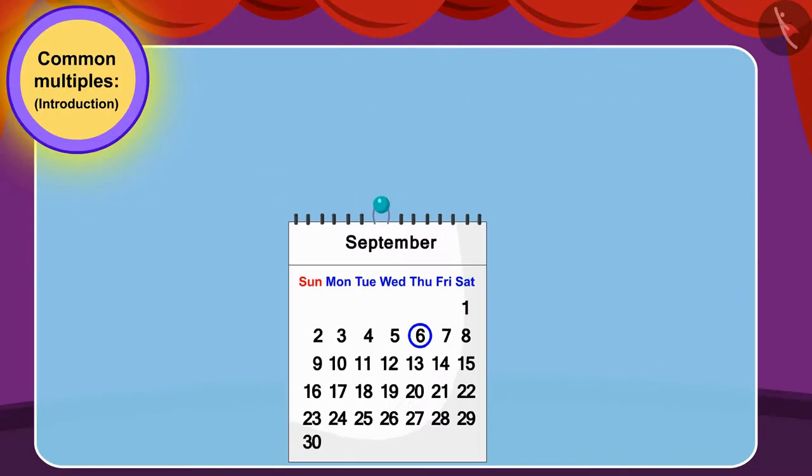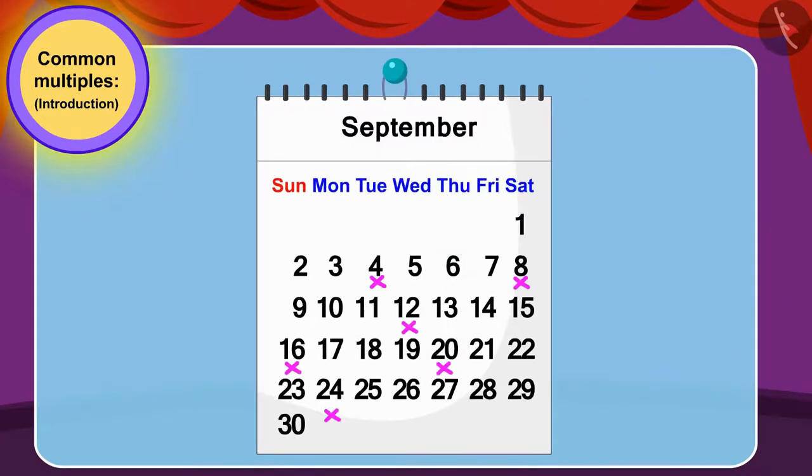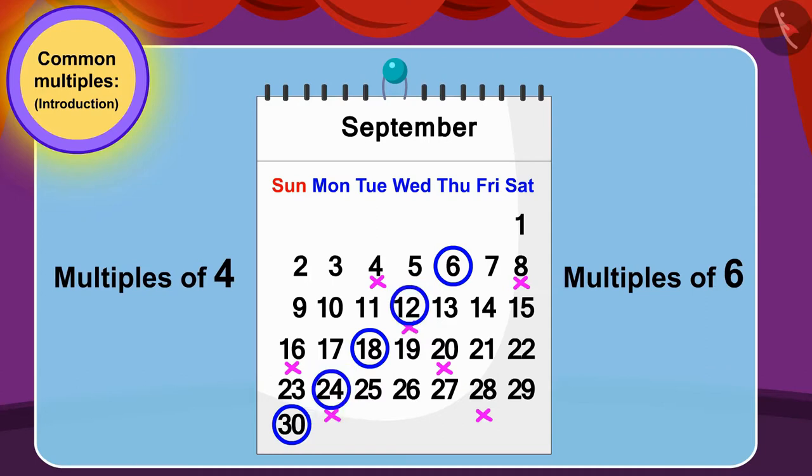Well done, children. Your answer is absolutely correct. We can find the answer by finding common multiples of four and six. We can see that the numbers twelve and twenty-four are common multiples of four and six. So, Bablu's math and science classes will be held on the twelfth and twenty-fourth simultaneously.